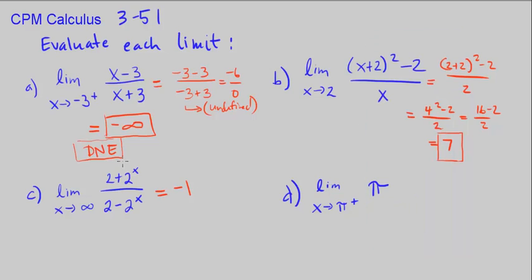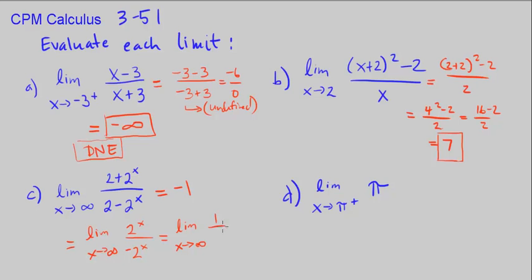Let's verify algebraically. As x gets really large, the constant 2 in the numerator and denominator becomes negligible, so we effectively have 2^x over negative 2^x. Simplifying, that's 1 over negative 1, which equals negative 1. So the limit as x approaches infinity of (2 + 2^x)/(2 − 2^x) is negative 1, confirmed both graphically and algebraically.